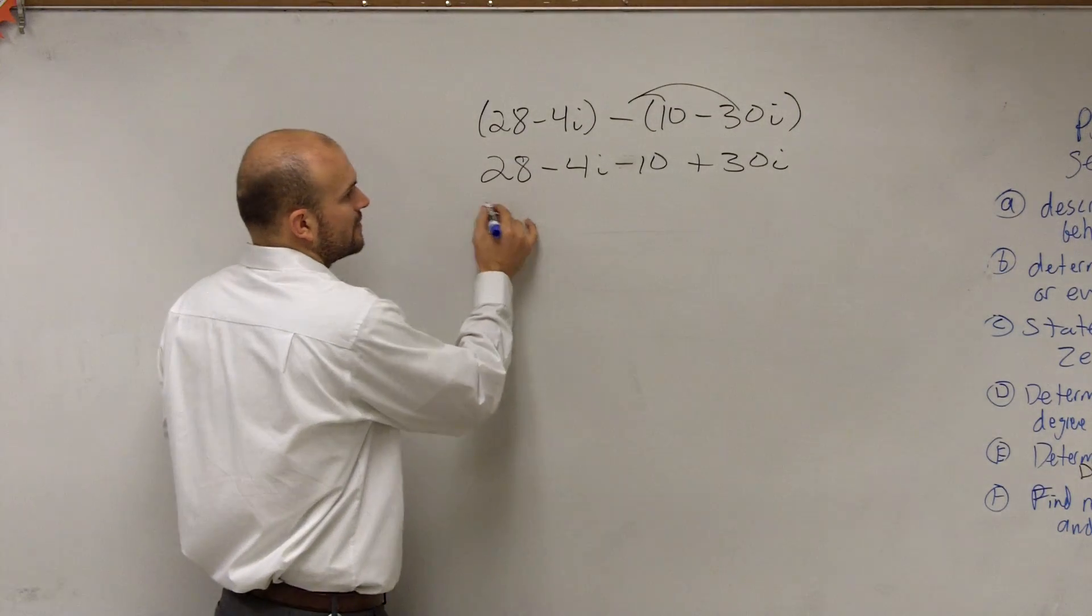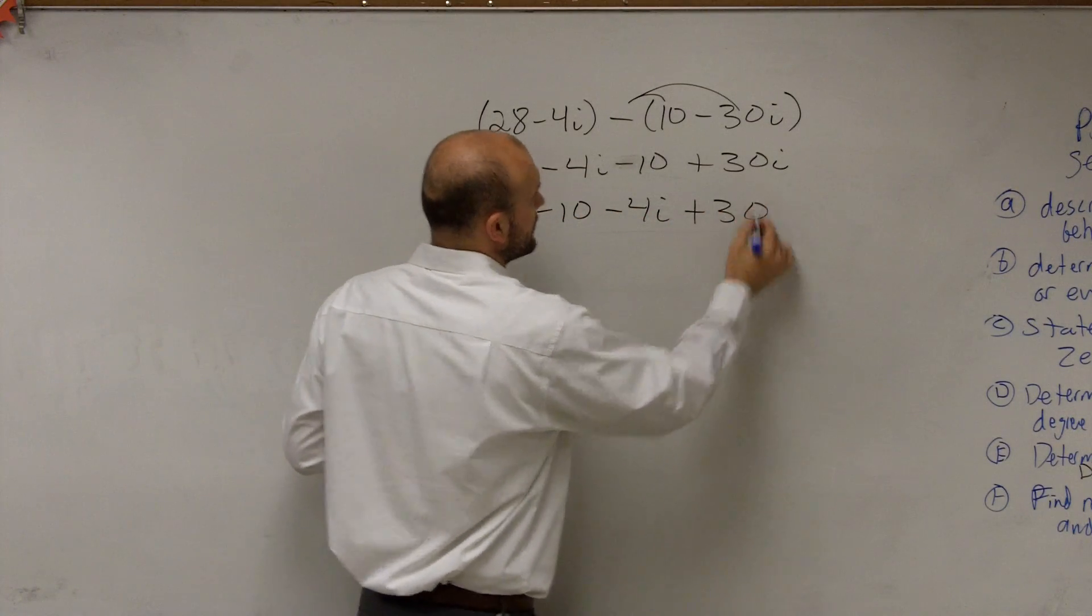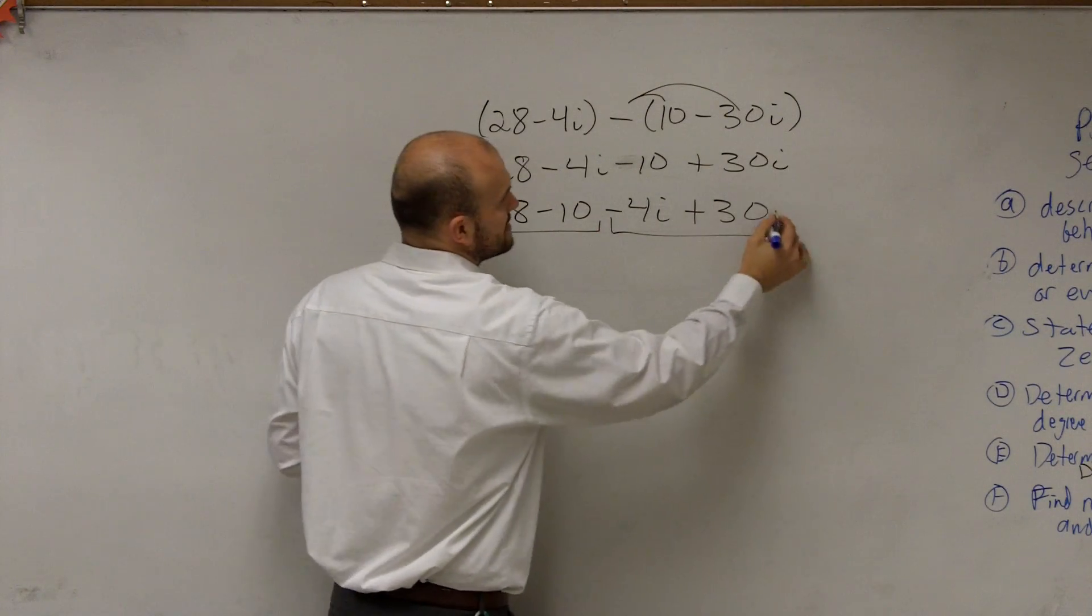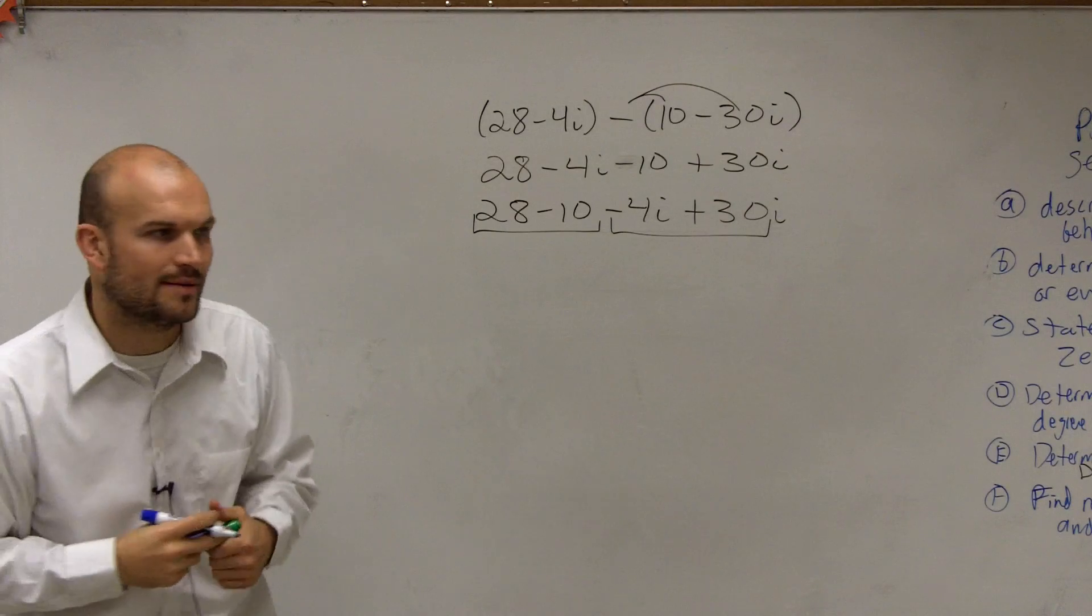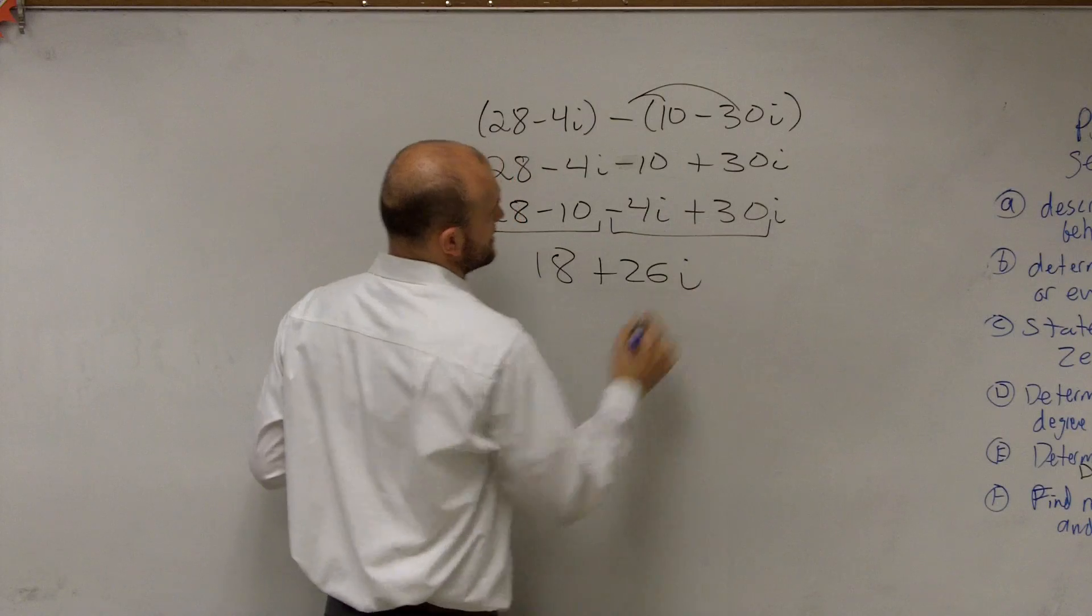So we have 28 minus 10, minus 4i plus 30i. Well, I can only combine a number with a number and numbers multiplied by imaginary numbers with numbers multiplied by imaginary. So it's 18 plus 26i.